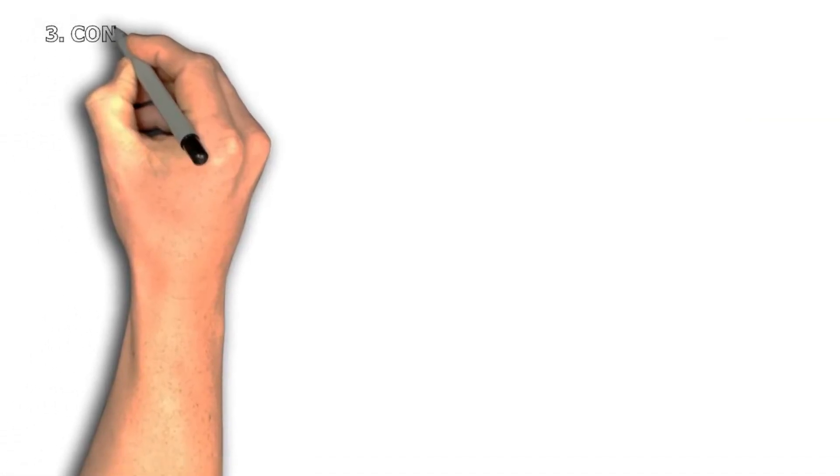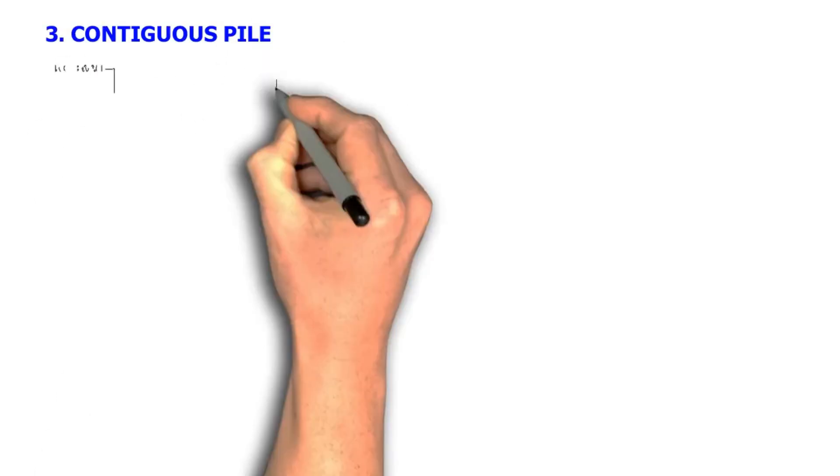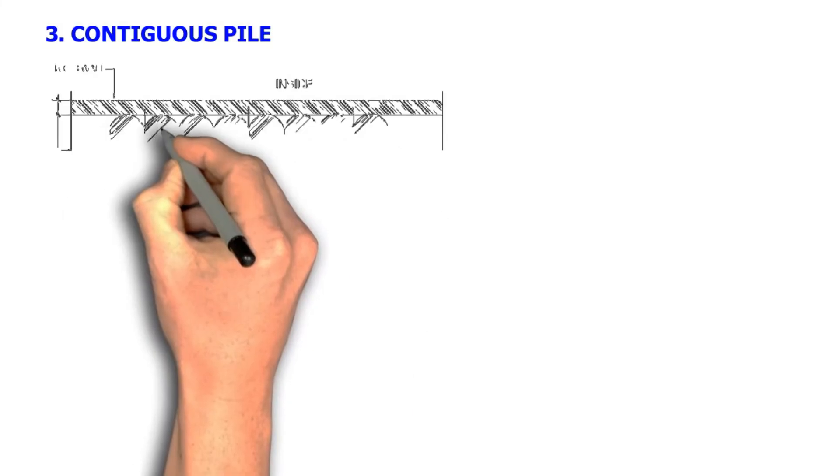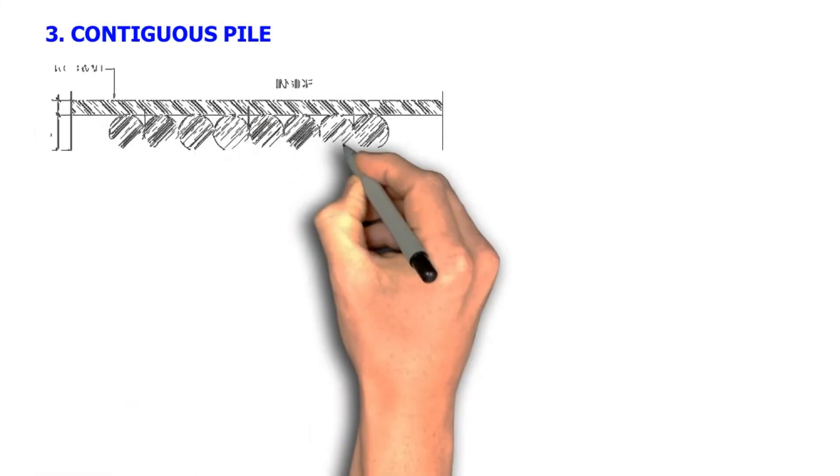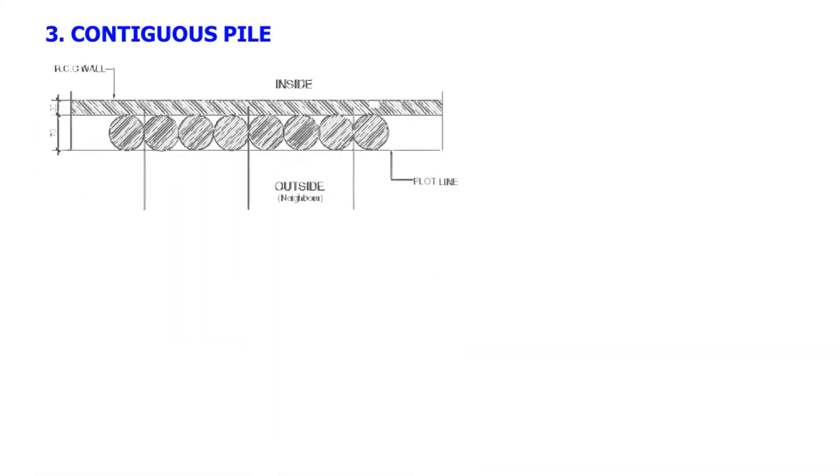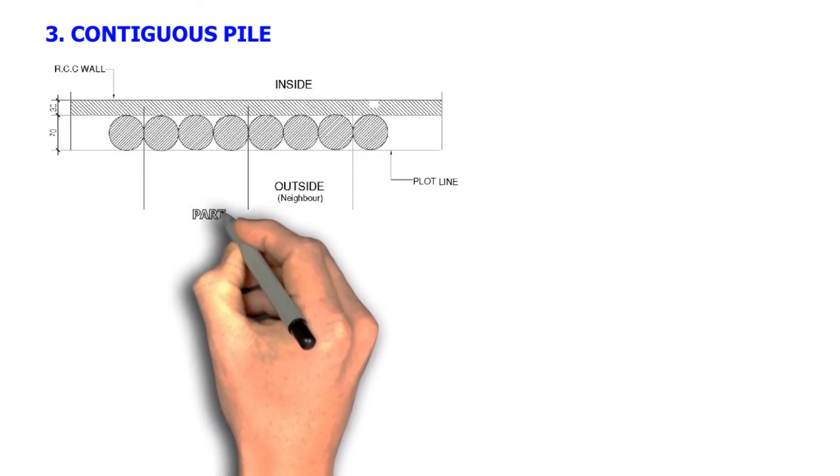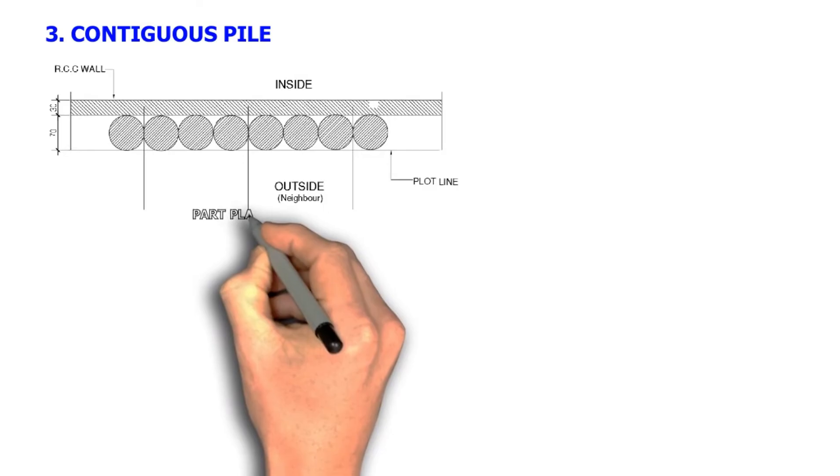Number 3, Contiguous pile shoring. Contiguous or tangent pile shoring is composed of closely spaced piles, wherein the faces of the piles are almost touching or tangent with each other. This is used in areas where water is not significant or the water pressure is very minimal. This is usually proposed in clay soils.